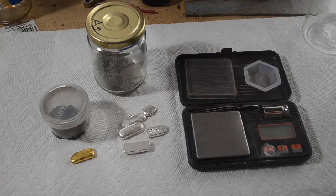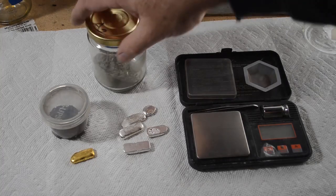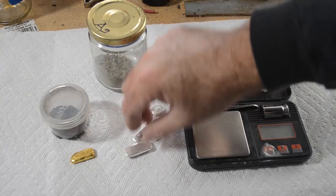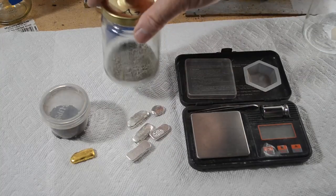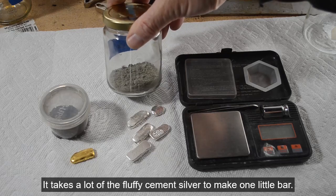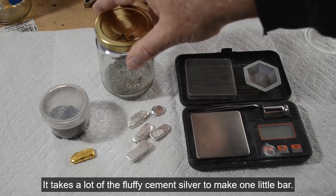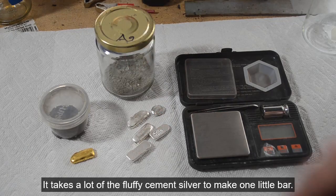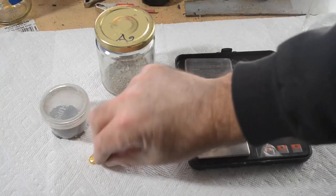I've got some gold and some silver here. Here's the silver and here's some cement silver that I haven't melted down yet. I wait till this jar gets fairly full and then I'll melt it down into bars. Here's some cement silver that's already melted down.